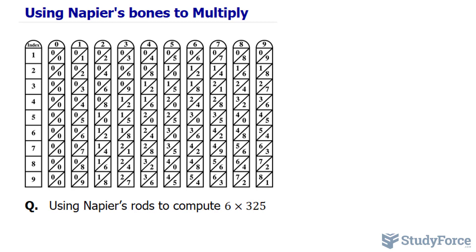So here's how it works. The factor 6 gets located on the index rod, and it's found right here. Then we'll focus on the rods for 3, 2, and 5.